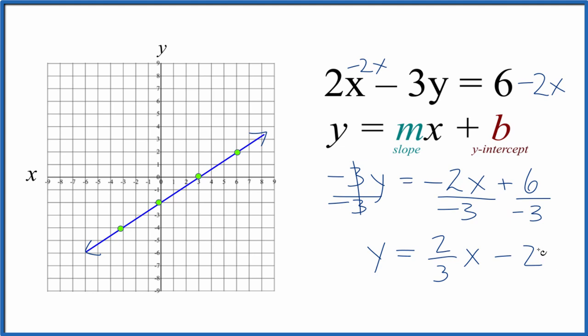This is Dr. B solving the equation 2x minus 3y equals 6, solving that for y, and then using slope-intercept formula to graph it. Thanks for watching.